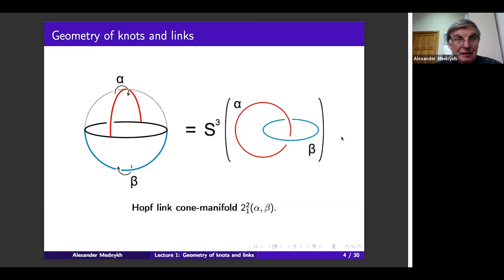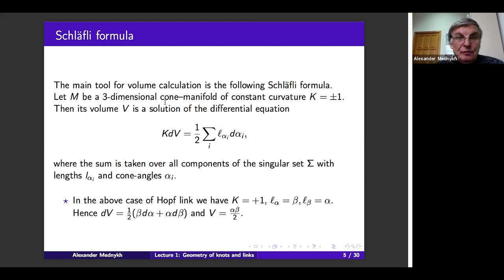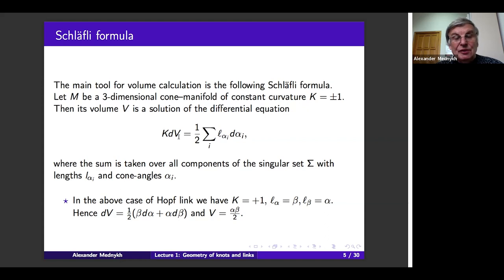To calculate the volume of a cone manifold of constant curvature — in our case constant curvature is plus one — we use the so-called Schläfli differential formula: k times dV = (1/2) × Σ l_α dα, where the sum is taken over all components, l_α is the length of the component, and α is the cone angle of that component. In our particular case of the Hopf link, the component with cone angle α has length β, and conversely the component with cone angle β has length α.